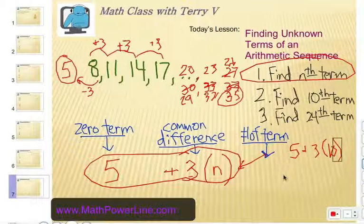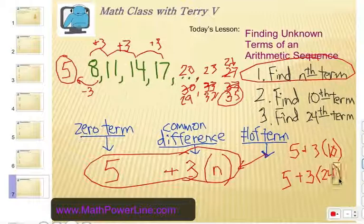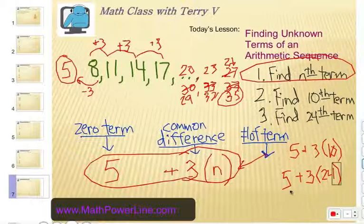Now, for the 24th term, question number 3, it would be 5, the 0 term, plus 3 times the 24 terms. So, 3 times 24 is 72, and add 5 to that, that would be 77. So, the 24th term would be 77.